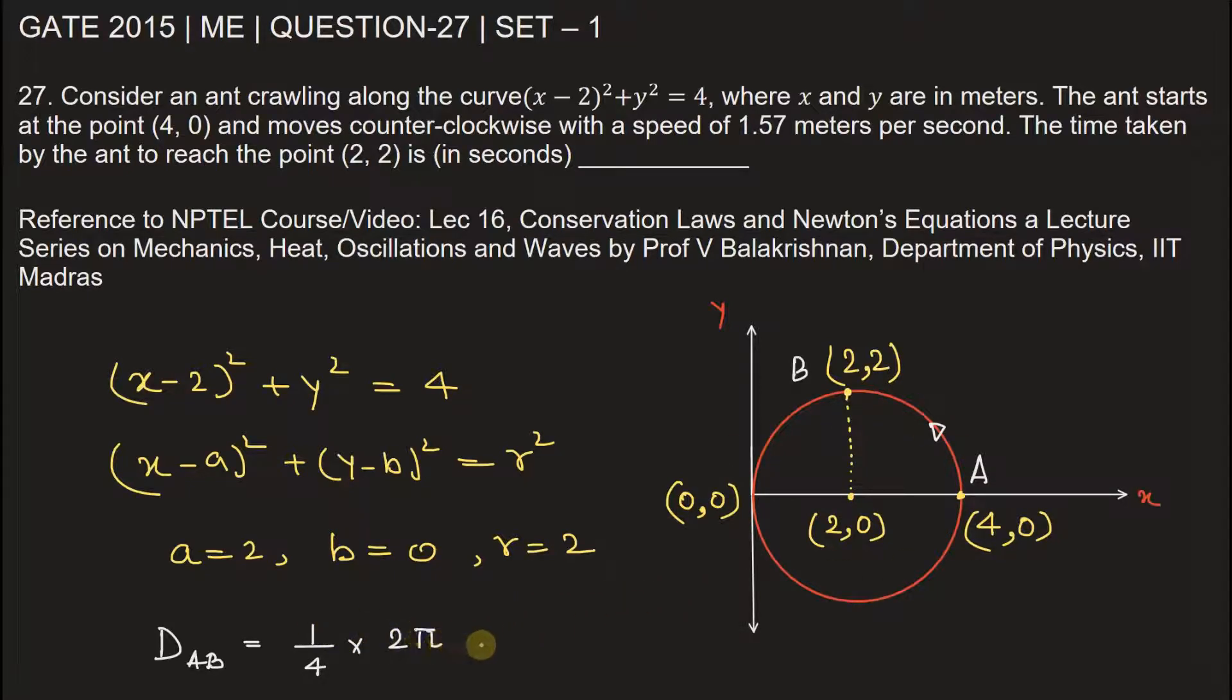which is 2π × 2. So this will be equal to π. The arc length AB is π.